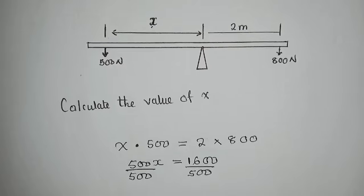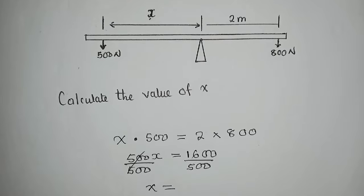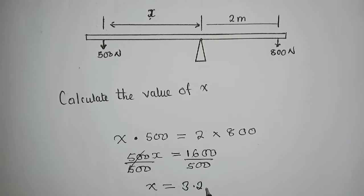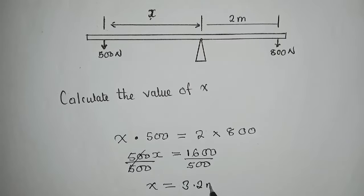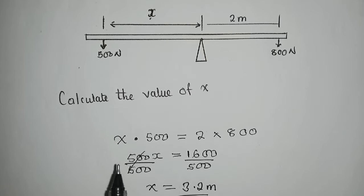On the other side when we divide by 500, we are remaining with 3.2. So put the units, 3.2 meters, because we are finding the value of x.